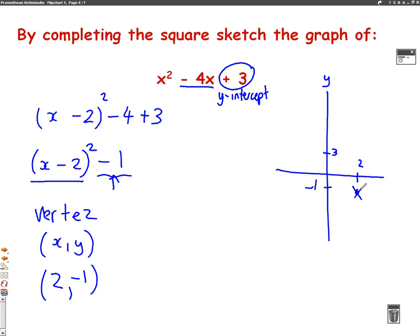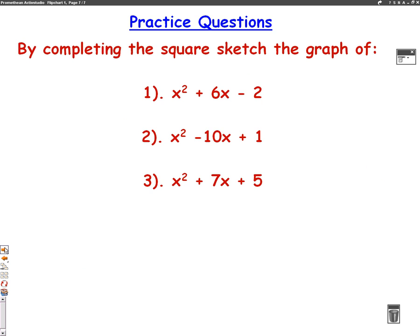All I've got to do now is draw the graph. So, the graph is a U-shaped graph that goes through the 3, goes through the vertex, like that. Again, we've sketched the graph using completing the square. If you're a bit struggling on how we actually completed the square, make sure you have a look at lesson 1 again to show you how to do it. Here are some practice questions for you to have a go at. Good luck.